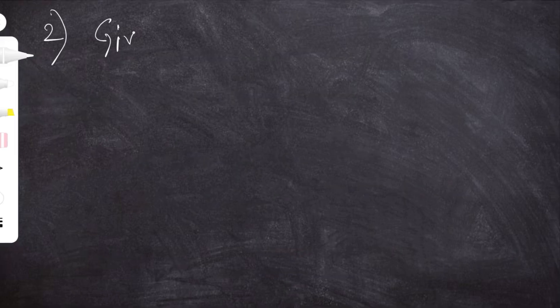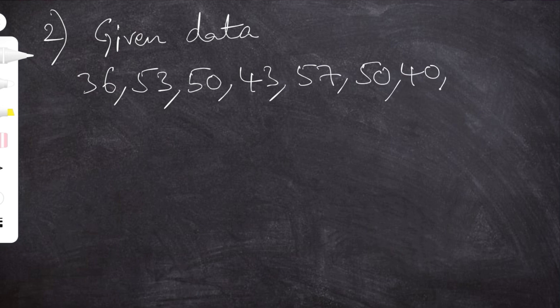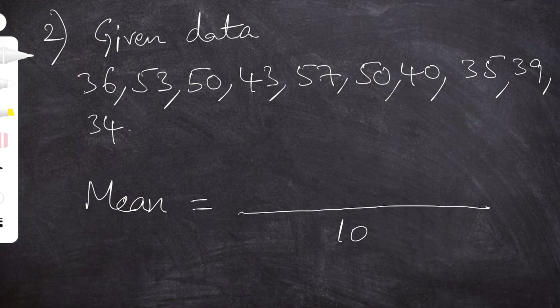Let's solve another example. The given data is 36, 53, 50, 43, 57, 50, 40, 35, 39 and 34. We have to calculate the mean. The formula of mean is sum of observations by number of observations. It is clearly visible that the number of observations are 10. The final answer is 43.7, which is the mean.